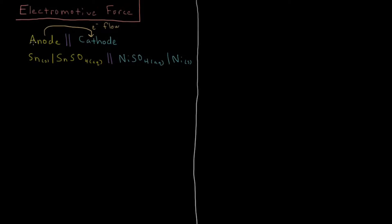As I said, generally the electron flow as the reactions are written would go from anode to cathode. For our reaction that we've been using through this series, that would be this cell diagram right here: tin being oxidized to tin sulfate ions and nickel sulfate ions being reduced to nickel.